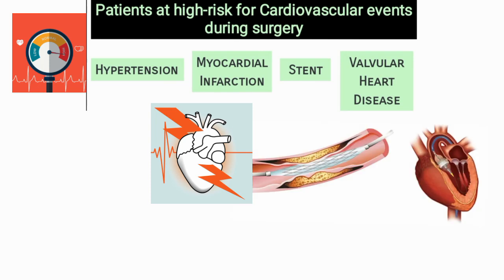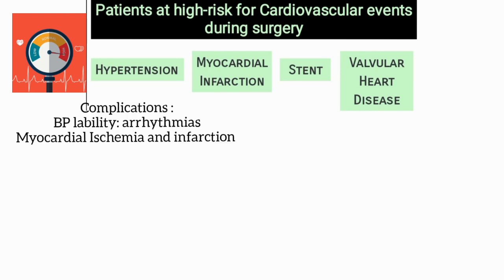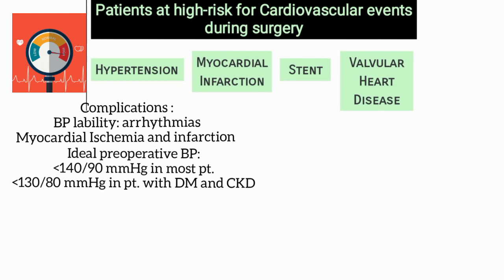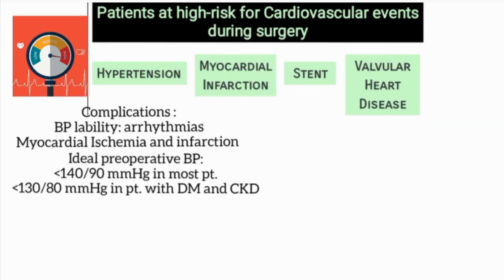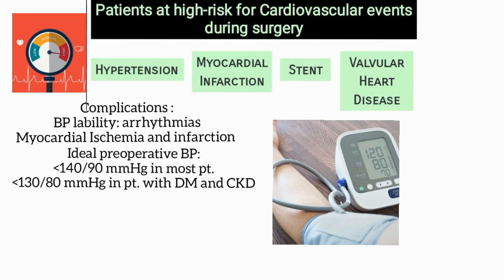Complications due to poorly controlled blood pressure during surgery include blood pressure lability, which can cause arrhythmias, myocardial ischemia, and infarction. The ideal preoperative blood pressure is less than 140/90 in most patients, whereas it should be less than 130/80 in patients with diabetes mellitus and chronic kidney disease.